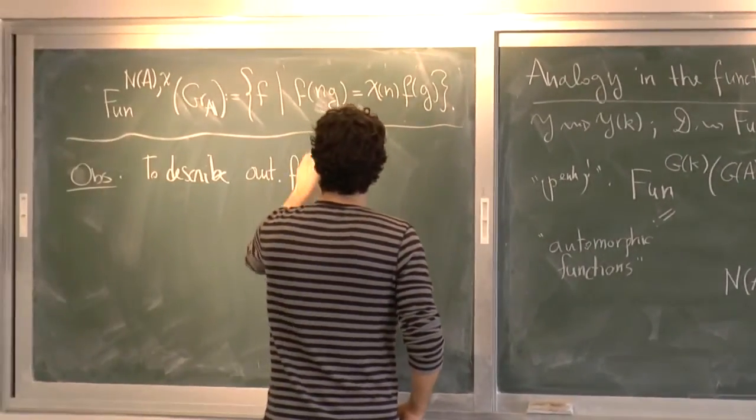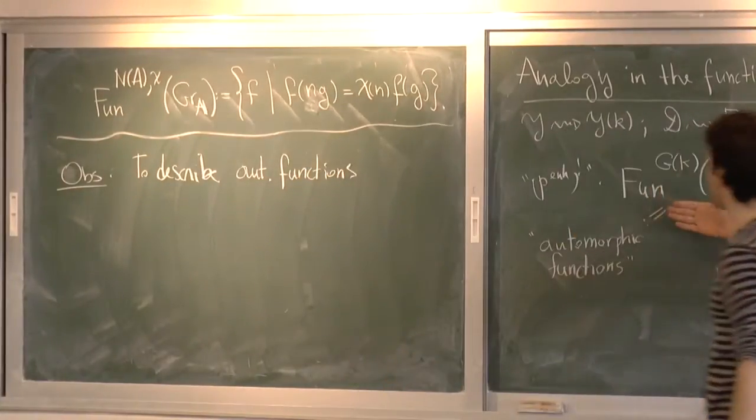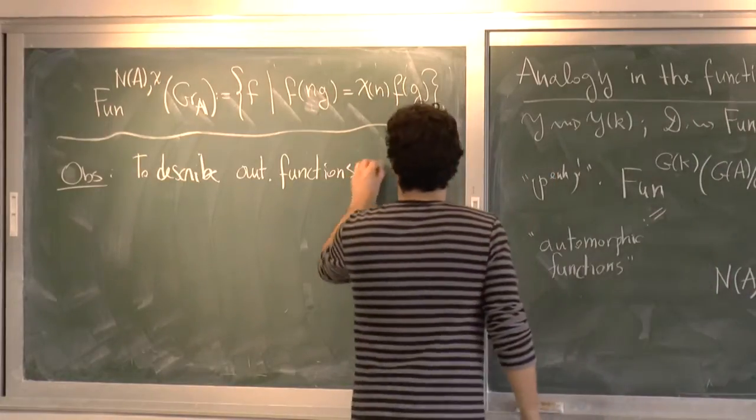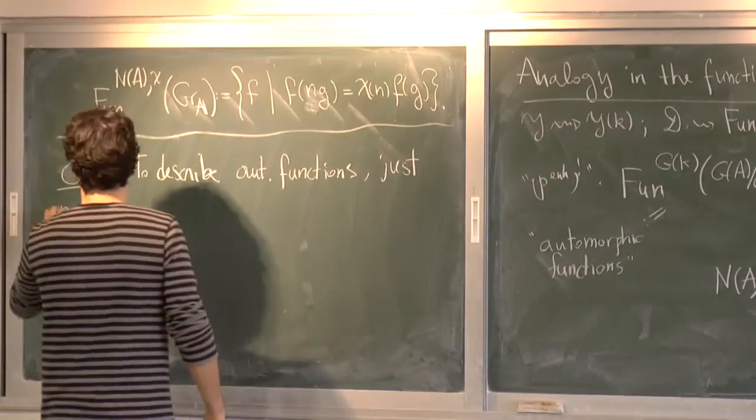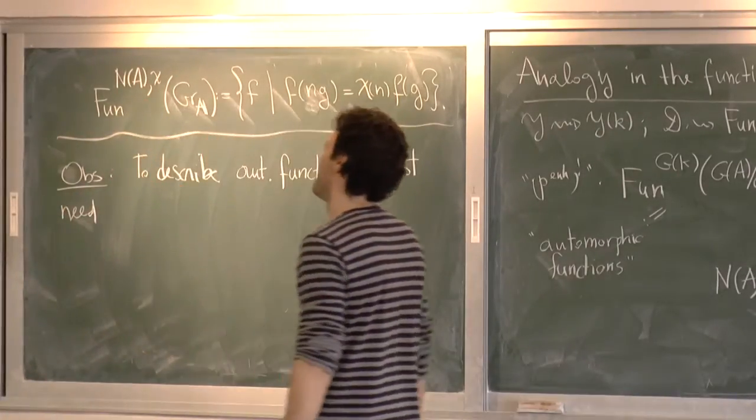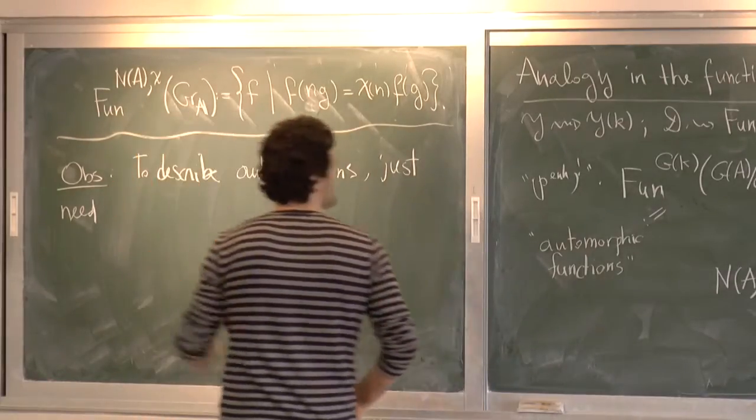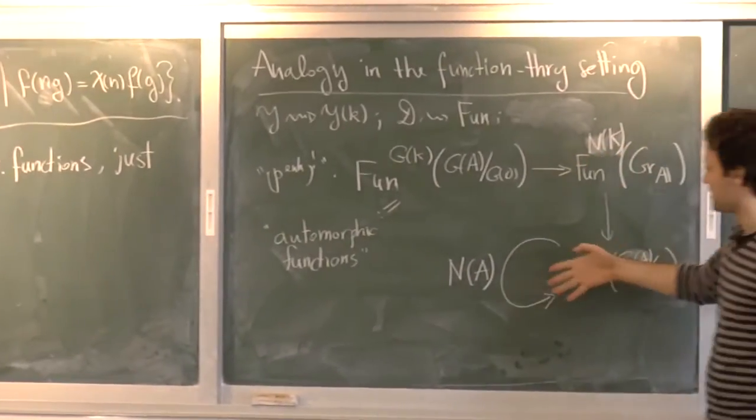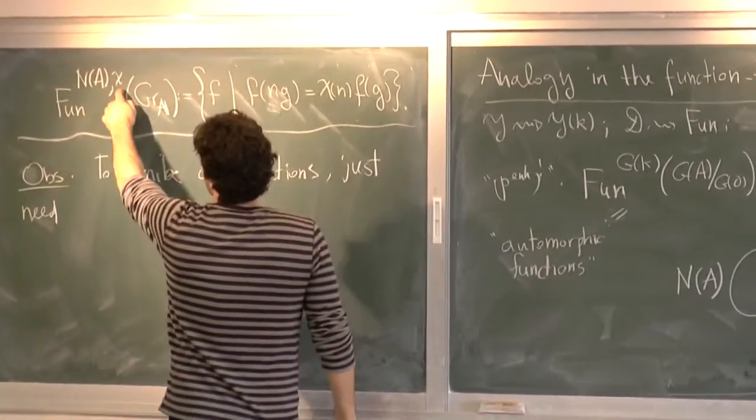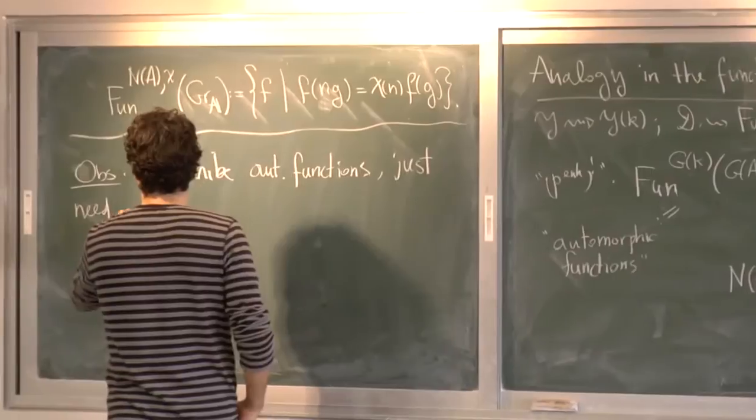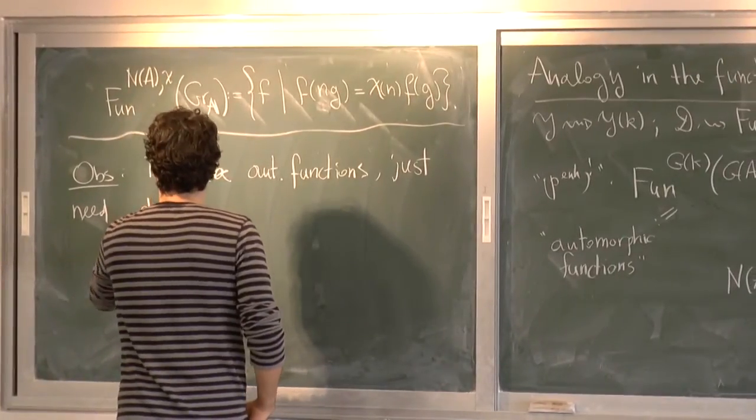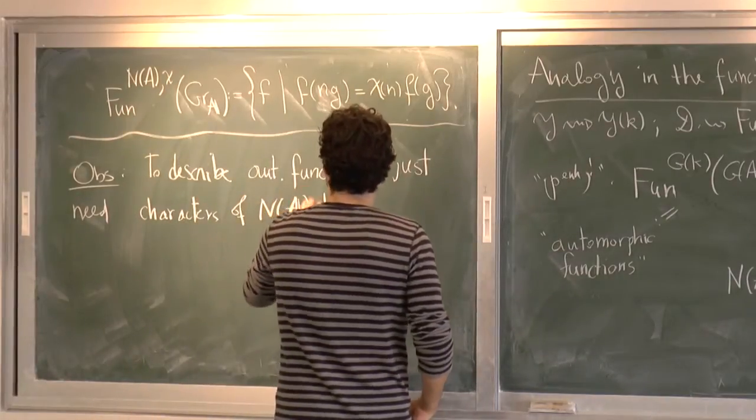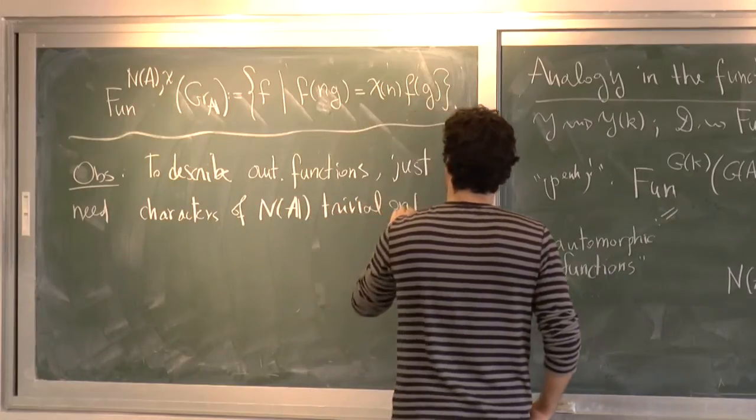So to describe automorphic functions, that means my main object that is the analog of D-modules on Bun_G. You don't need all characters of N of A. You just need those characters that are trivial on N of K. Because any automorphic function is invariant with respect to N of K. So interesting Fourier coefficients are only those that are 0 on N of K.